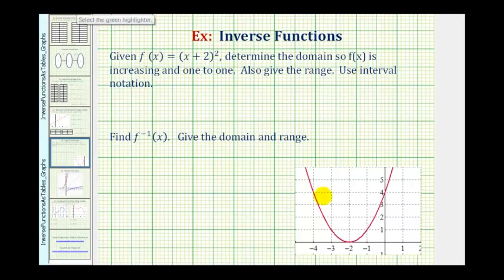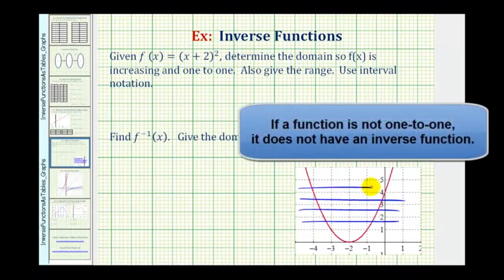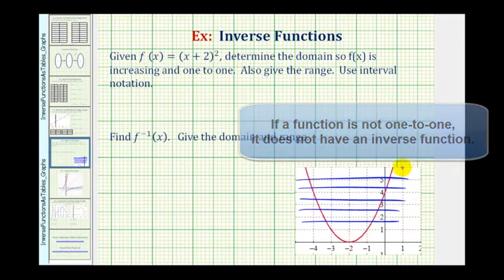Here's a graph of our function f of x. Notice if we don't restrict the domain, this function is not one-to-one because horizontal lines would intersect this graph in more than one point. Notice the function is also decreasing on the left and increasing on the right.